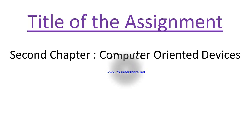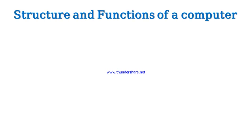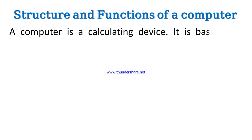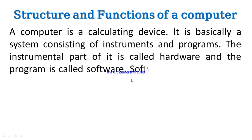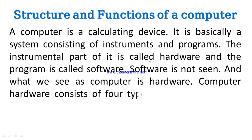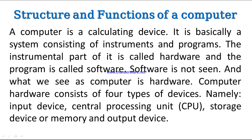Structure and functions of a computer: a computer is a calculating device. It is basically a system consisting of instruments and programs. The instrumental part is called hardware and the program is called software. Software is not seen, and what we see as a computer is hardware. Computer hardware consists of four types of devices: input device, central processing unit (CPU), storage device or memory, and output device.